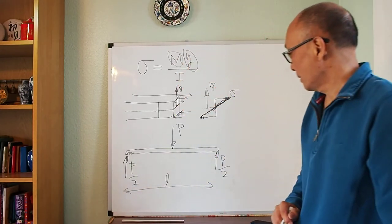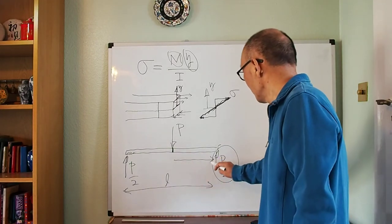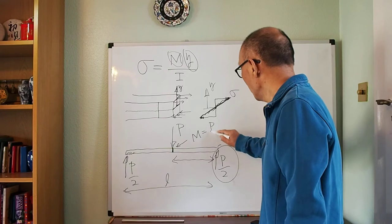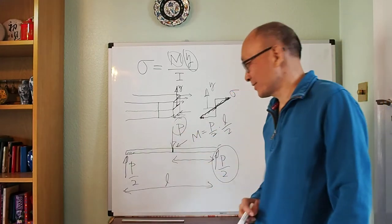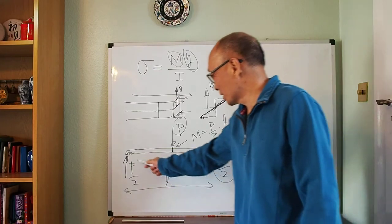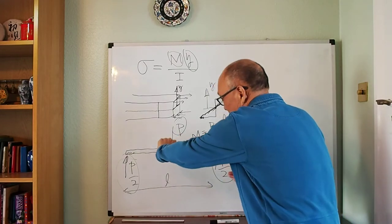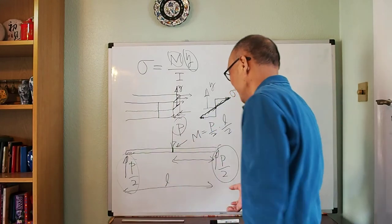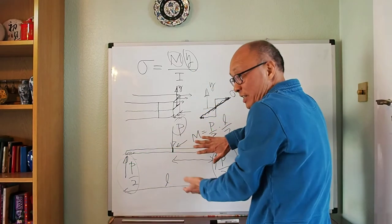Let's say this beam has a length L. The bending moment underneath the applied force is simply the reaction force times its lever arm, so the bending moment there is P/2 times L/2. When you calculate bending moment, you look from one direction — the moment from the far support force goes through that section — so it's simply this force times its distance. You can look from the other direction and get the same result.